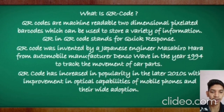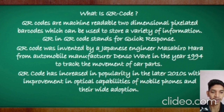For starters, what is a QR code? QR codes are everywhere — you can find them printed on packaging of the latest gadgets, on business cards, etc. The quick response codes are machine-readable two-dimensional pixelated barcodes which can be used to store a variety of information. It was invented in 1994 and has increased in popularity recently.